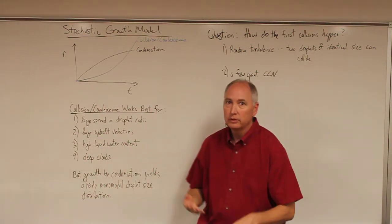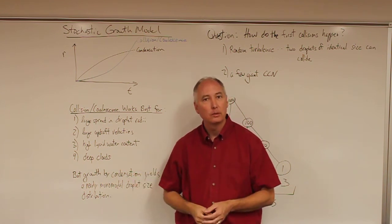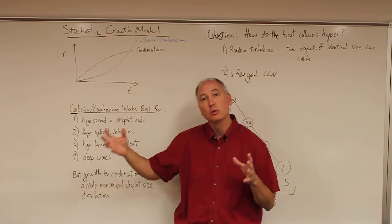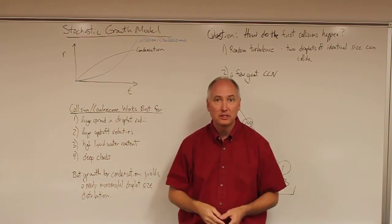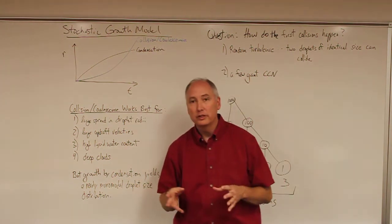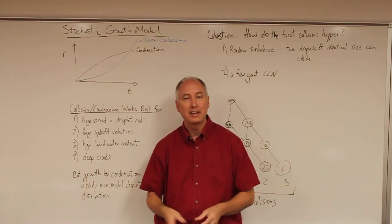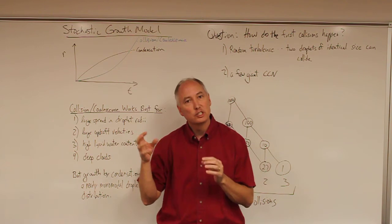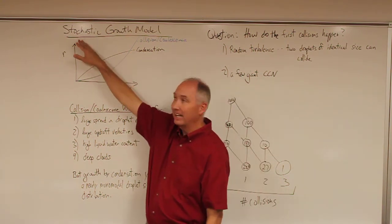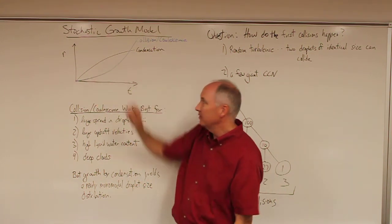In this lecture, we're going to introduce a slightly different type of growth model. Before, what we had was a continuous growth model where a collector droplet is continually growing by the addition of droplets as it moves through the cloud. In this particular model, what we're going to do is say that the droplet growth is a result of a number of discrete capture events. We're going to talk about that as being a stochastic model, and the reason we want to talk about it this way is because of this graph right here.